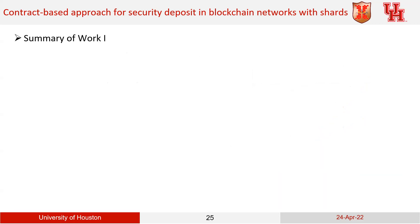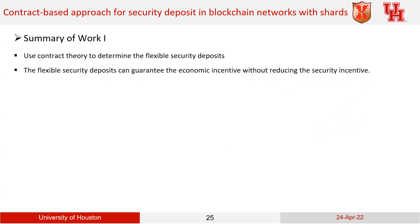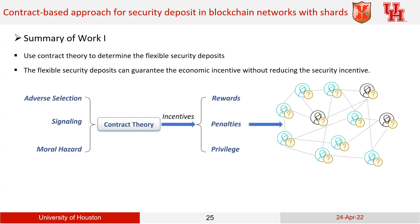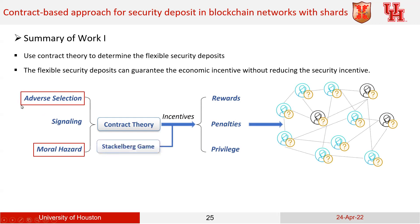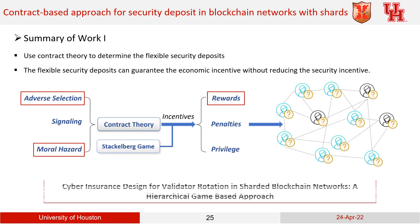In summary of the first work: I used contract theory to determine the flexible security deposit, demonstrated that the economic incentive can be increased, and did not reduce the security incentive. The adverse selection model is used to realize the penalty incentive under the crypto economics framework. The next work uses a combined model under contract theory combined with another game theory called the Stackelberg game to deal with the online reward issue. The title is 'Cyber Insurance Design for Validator Rotation in Sharded Blockchain Networks: A Hierarchical Game-Based Approach.'